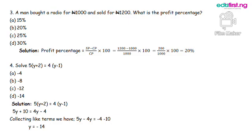Collecting like terms, we have 5y minus 4y equals minus 4 minus 10. 5y minus 4y will give us y equals minus 4 minus 10, will give us minus 14. So the correct answer is option D.